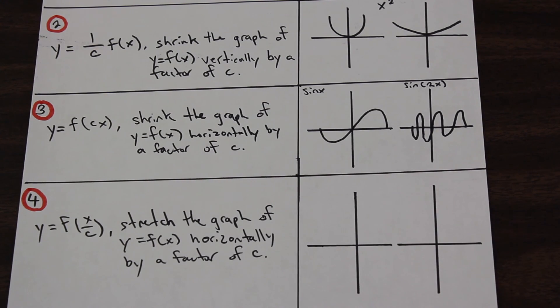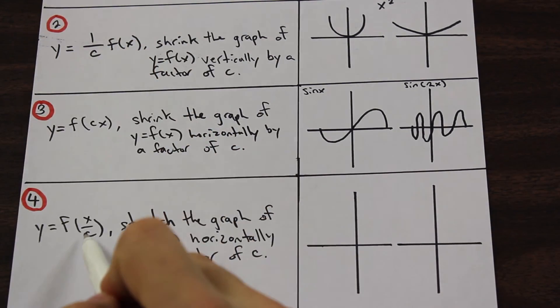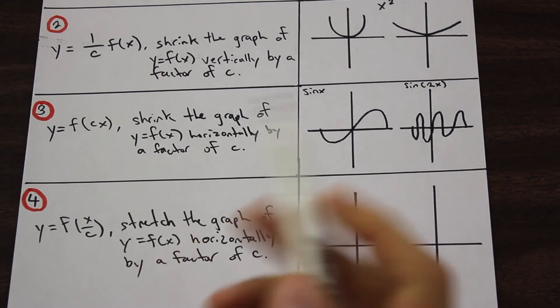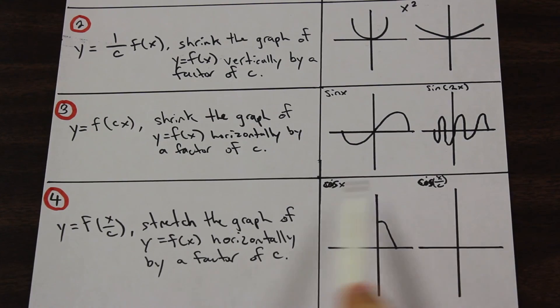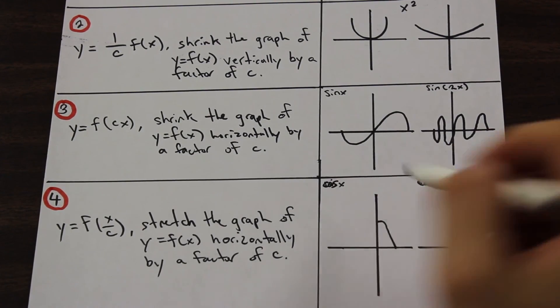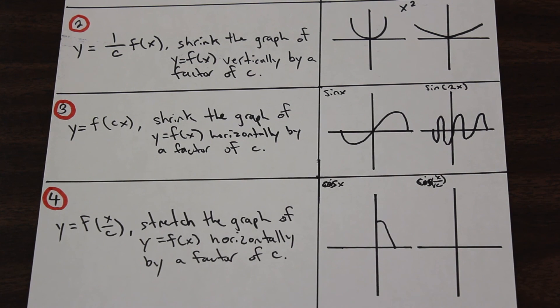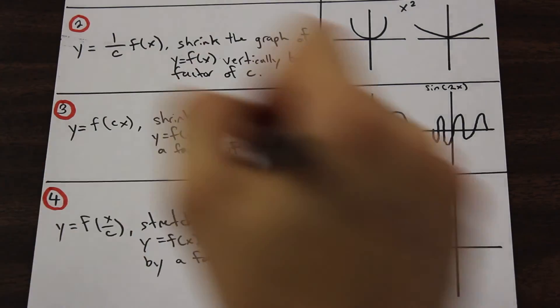So if we look at number four, we have pretty much the same thing as two, but now the constant c is being divided by the inner part of the function. And I've just gone ahead and I've written down... We're going to use cos for this one, just so you can see. And we have y equals f of x over c. So that c is being divided by the inner argument of the function.